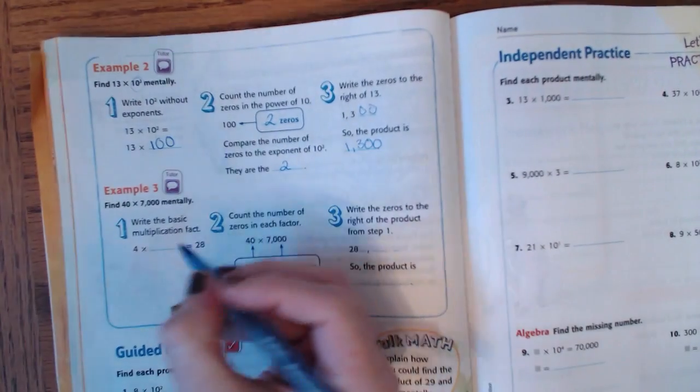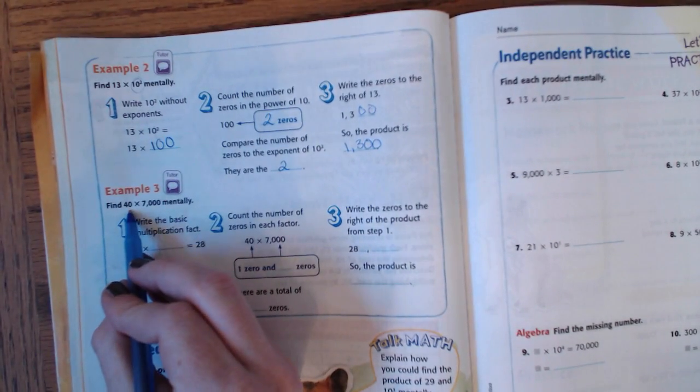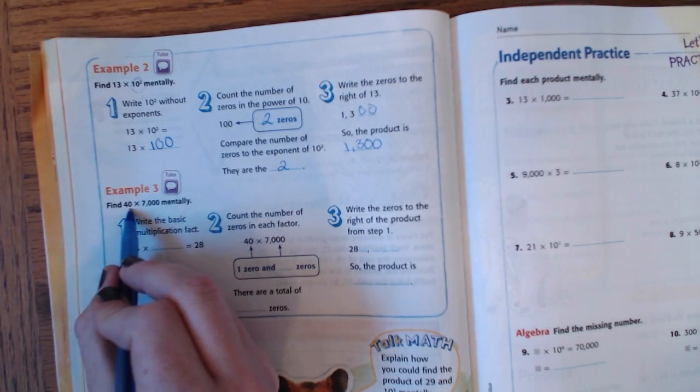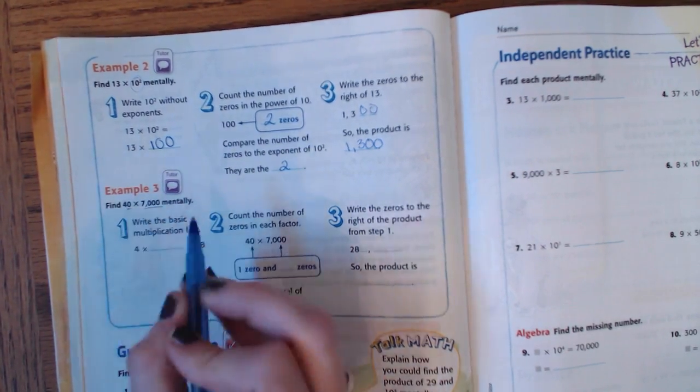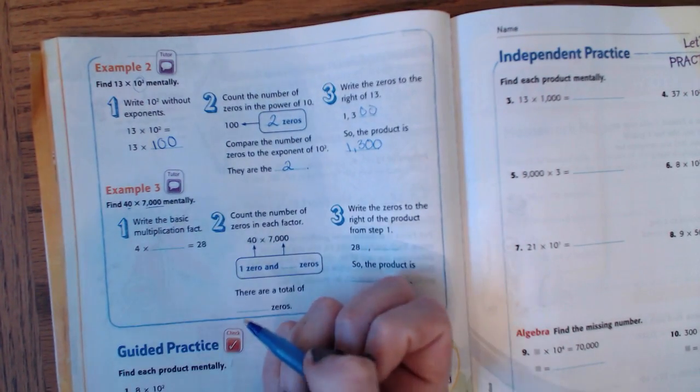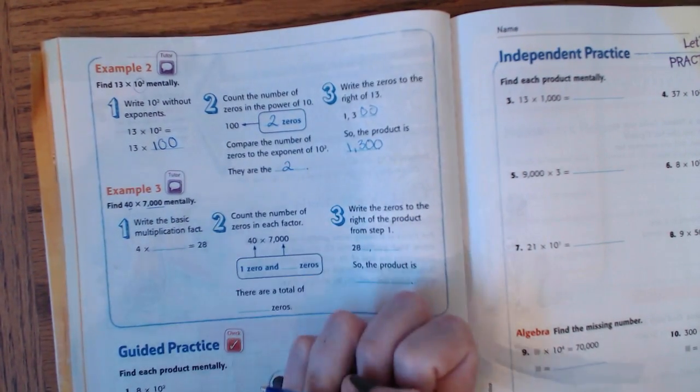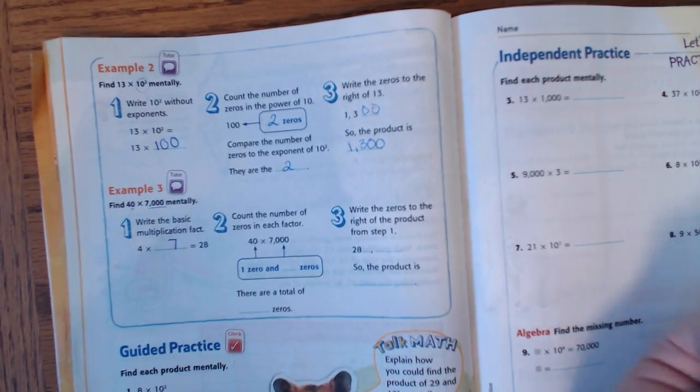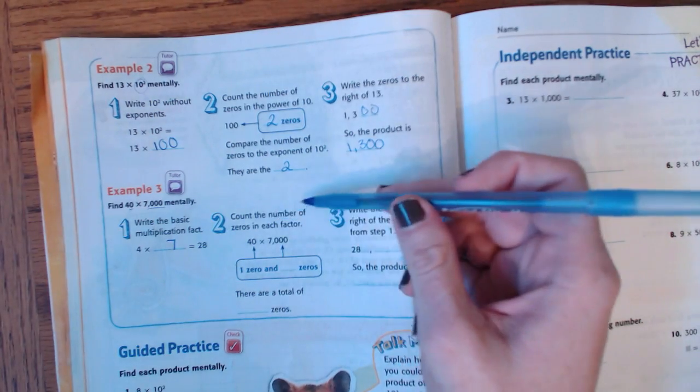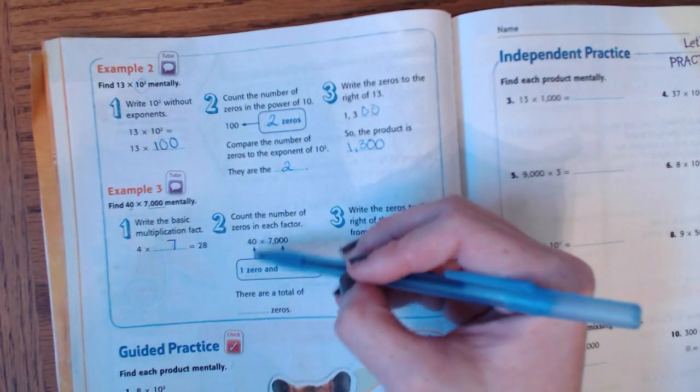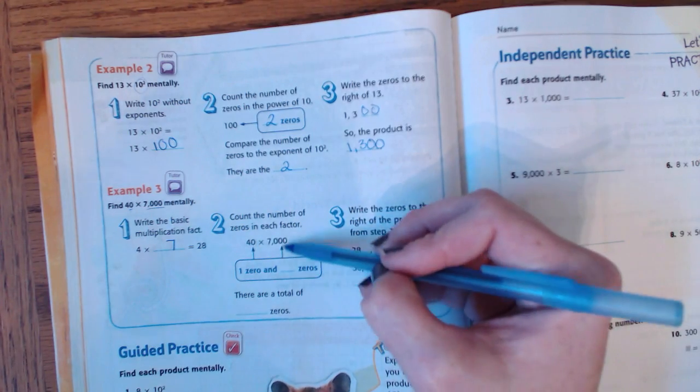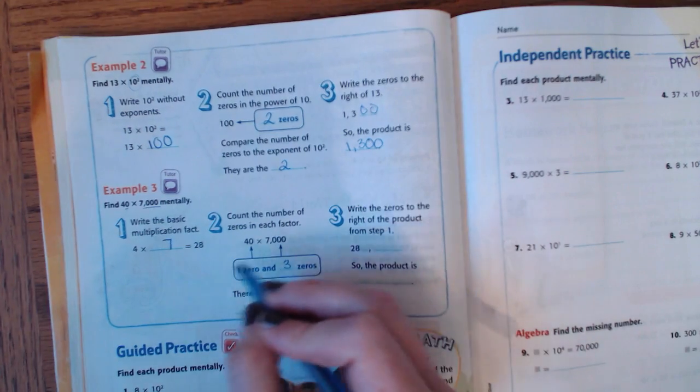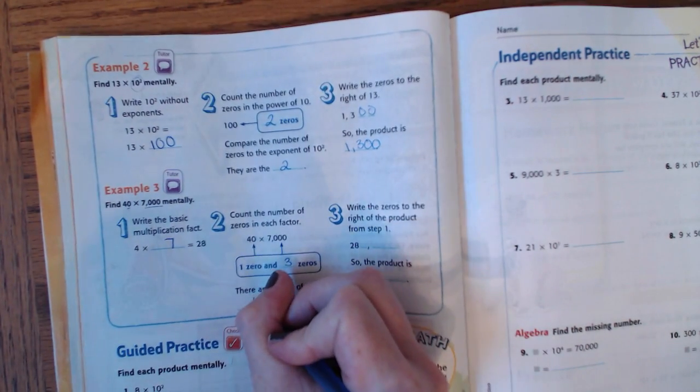So let's look here. 40 times 7,000. Now this time we have zeros in both numbers, so we've got to be careful, okay? Write the basic multiplication fact. Well, what times 4 equals 28? Well, we know that that's 7. So now we're going to count the number of zeros in each factor. Well, there's one zero in 40. And how many are in 7,000? There are 3. So how many do we have in total? We have 4.